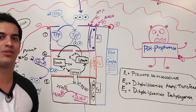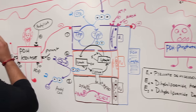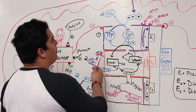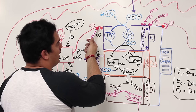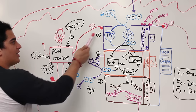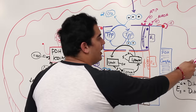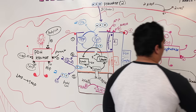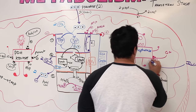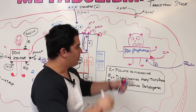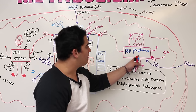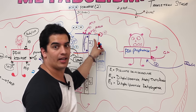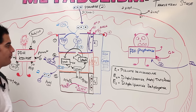Hormonally, insulin also stimulates PDH phosphatase through second messenger processes. When PDH phosphatase is activated by insulin, it pulls the phosphate off enzyme one, stimulating it and leading to the formation of acetyl-CoA.